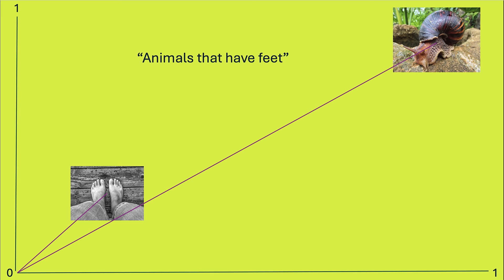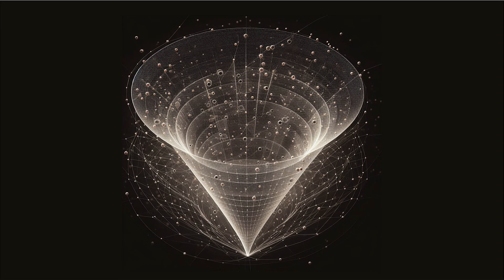You might also be wondering, well, what if they're far away, but the angle is small? Because then the cosine similarity would say, okay, these things are similar. Like if I said animals that have feet would give me a human and a snail. But actually those two points are quite far away. So the embedding model has more dimensions than two, like I mentioned. And it's more of a multi-dimensional cone of points.